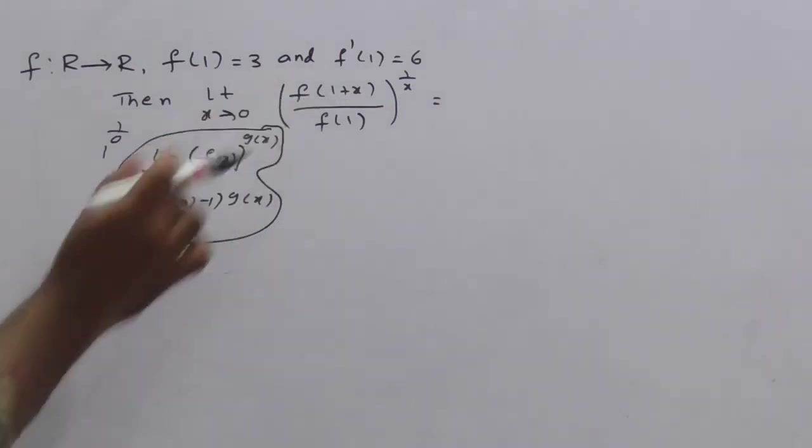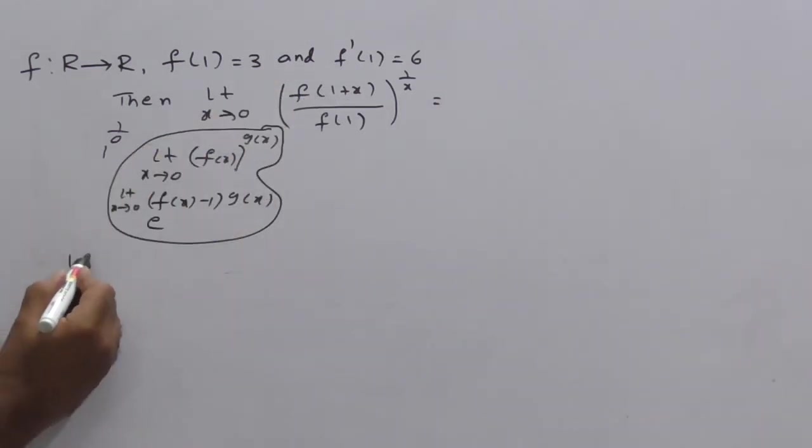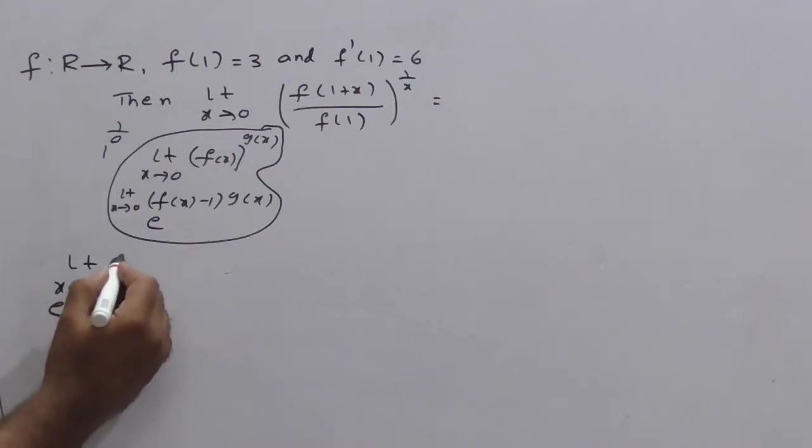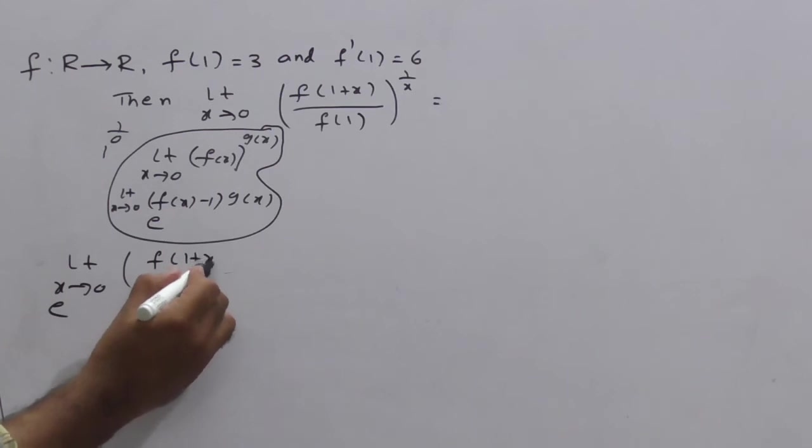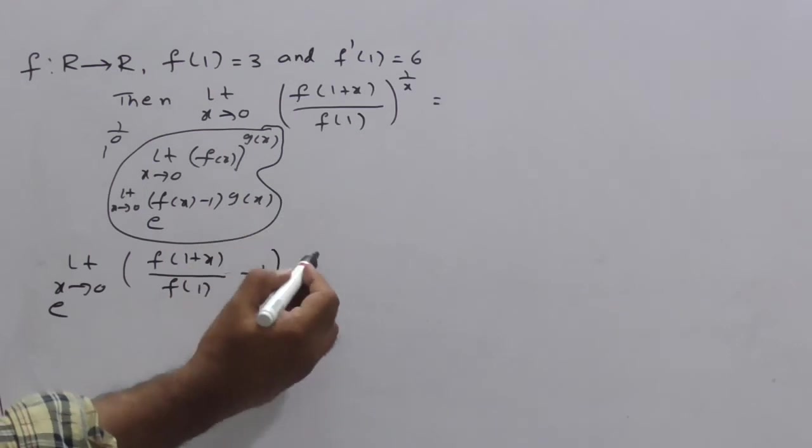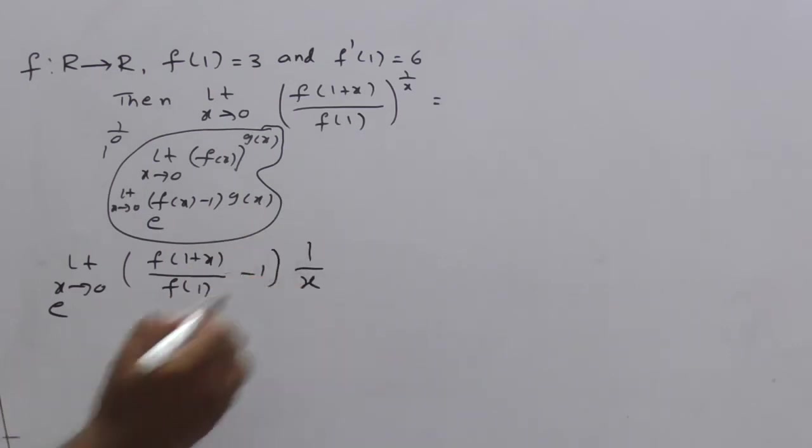Substitute this there. Here, now we get limit x tends to 0, that is e to the power limit x tends to 0. f(x), that is f(1+x) by f(1) minus 1 into g(x). What is g(x)? This is 1 by x.